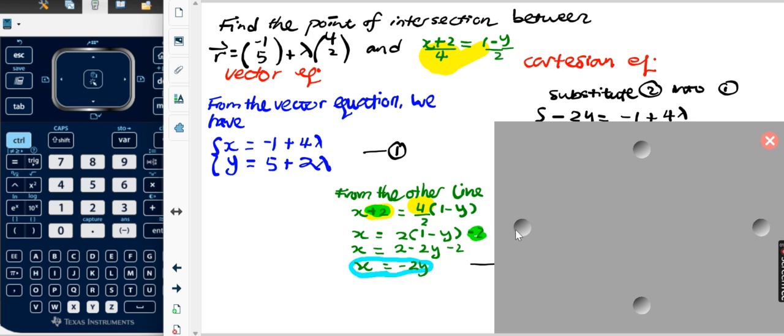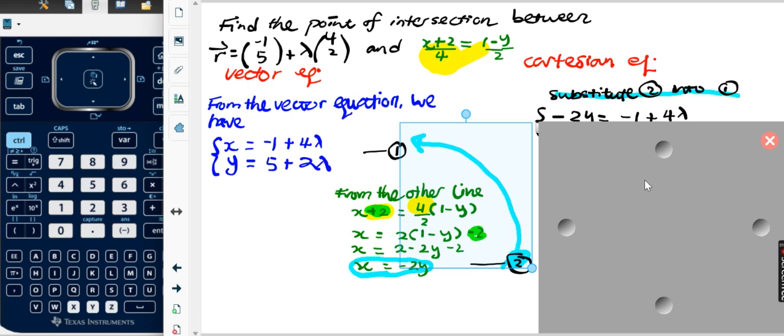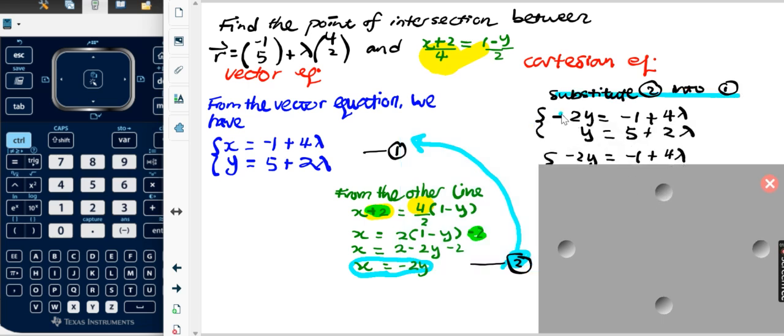And substitute equation two into system one. So right now, you can see that instead of x, I put in negative two y.